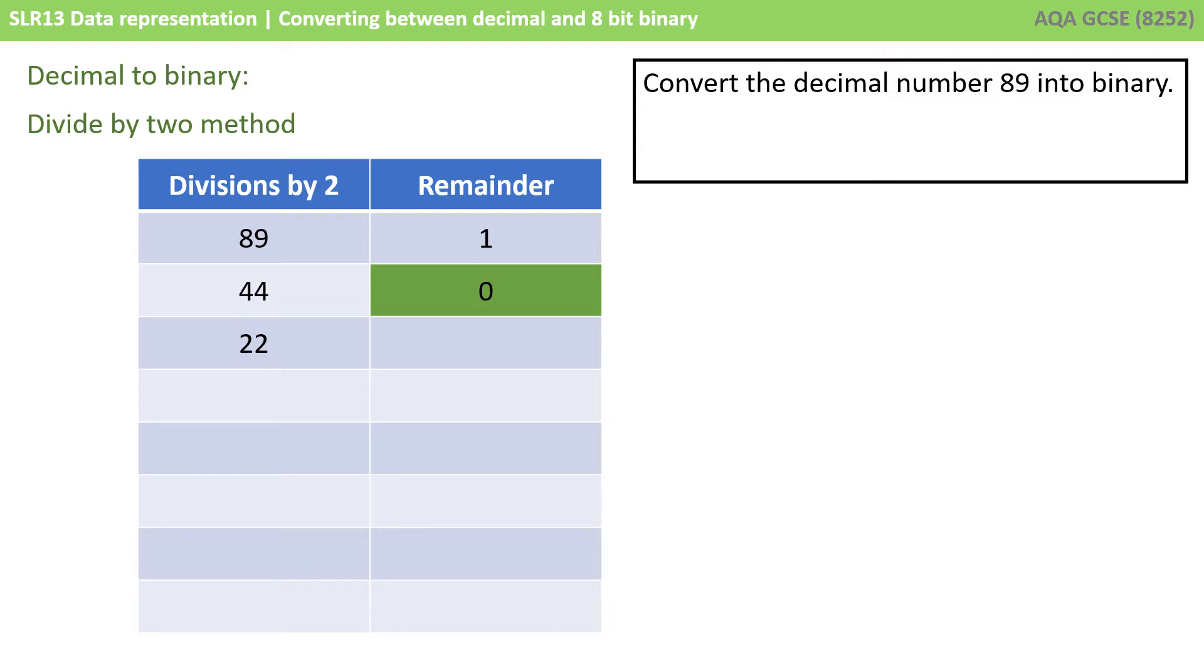We then divide 44 by 2 and we get 22 with 0 left over. It divides neatly by 2. 22 divided by 2 is 11 with 0 left over. 11 divided by 2 is 5, this time with 1 remaining.